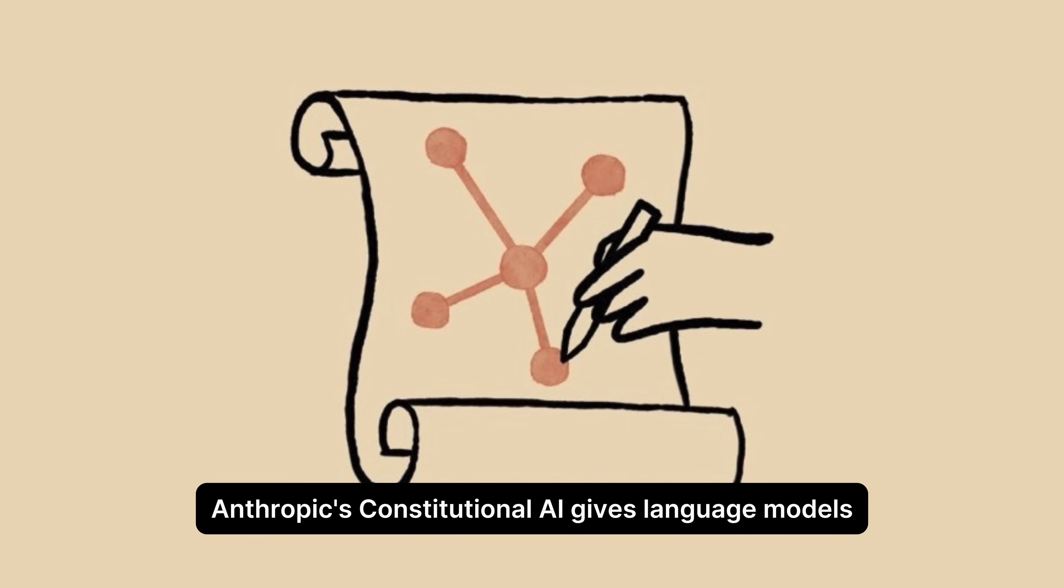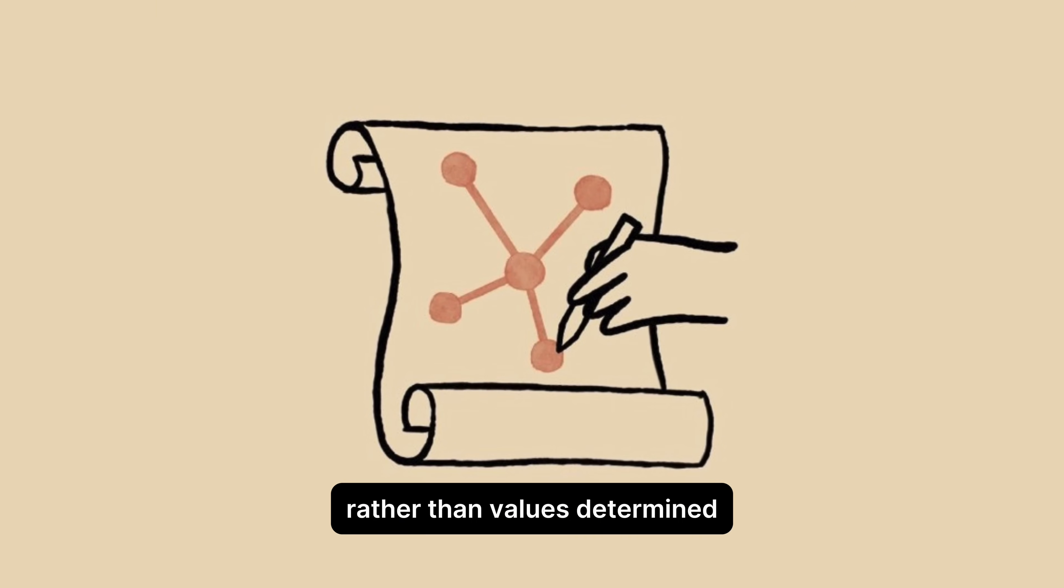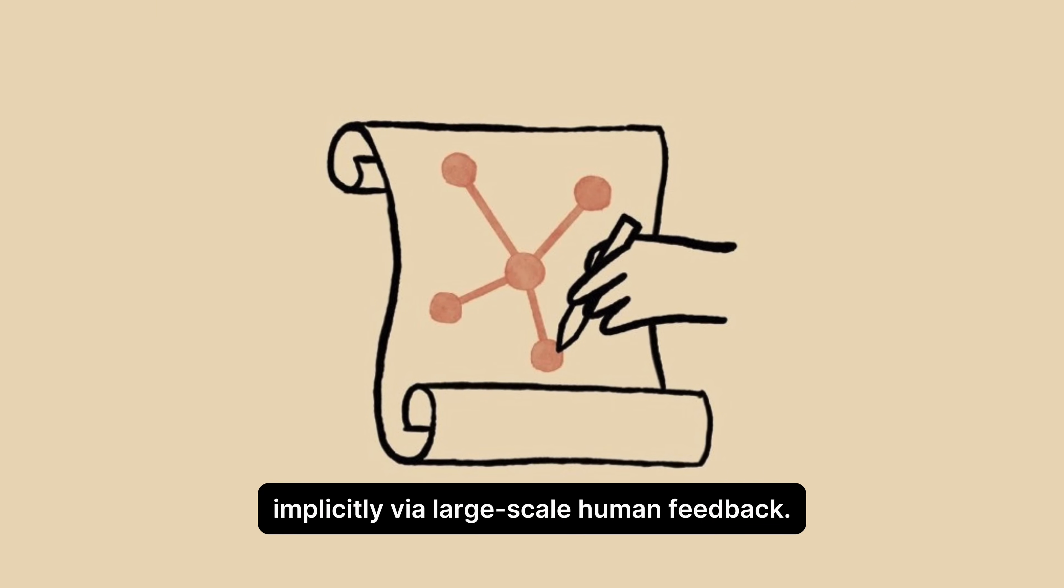Anthropic's Constitutional AI gives language models explicit values determined by a constitution, rather than values determined implicitly via large-scale human feedback.